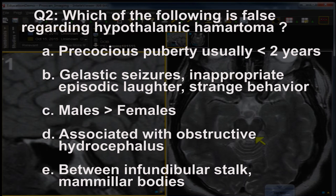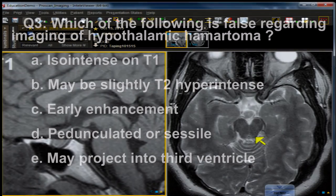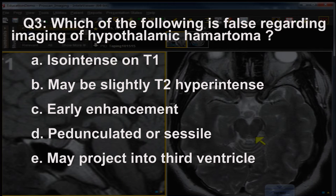A) precocious puberty usually less than two years, B) gelastic seizures or inappropriate episodic laughter and strange behavior, C) males greater than females, D) associated with obstructive hydrocephalus, E) location between the infundibular stalk and mammillary bodies. Question three: which of the following is false regarding imaging of hypothalamic hamartoma? A) iso-intense on T1, B) may be slightly hyper-intense on T2, C) early enhancement, D) pedunculated or sessile, E) may project into the third ventricle.